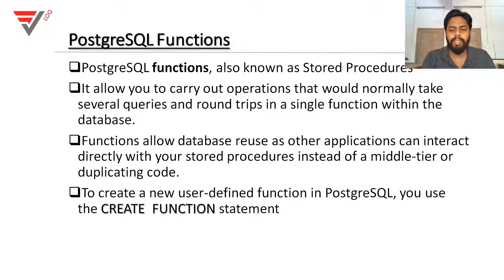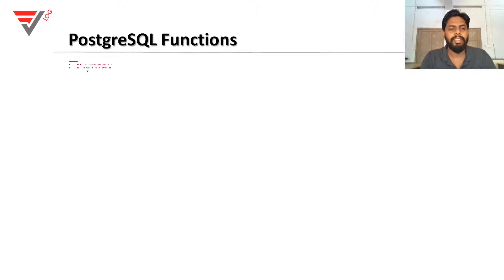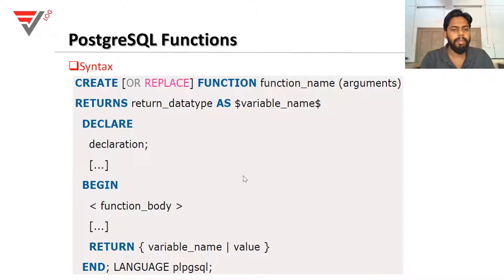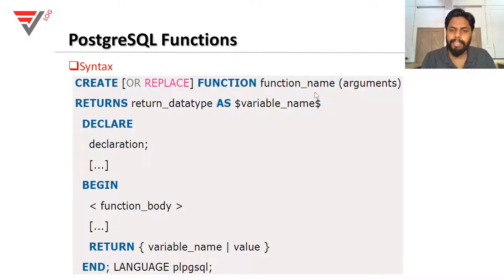Here, the keyword is 'create function'. We will now go to the syntax. PostgreSQL function syntax — keywords are in blue color. The syntax is: CREATE OR REPLACE FUNCTION, function name, brackets, arguments.